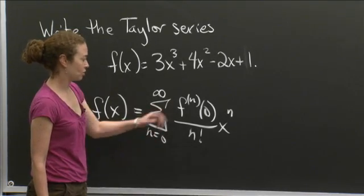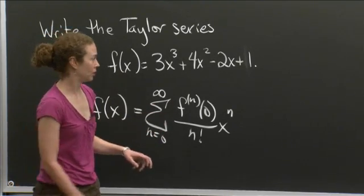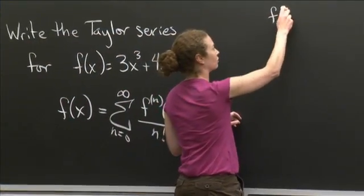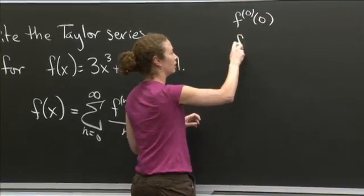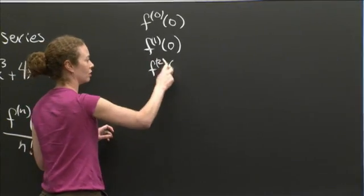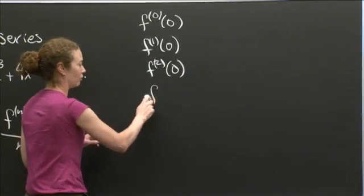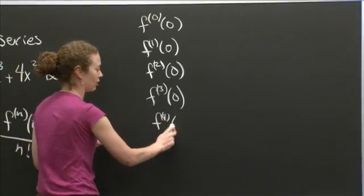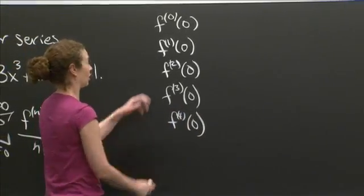So I'm going to make myself a little table. We're going to say f0 at 0, f1 at 0, f2 at 0, f3 at 0, f4 at 0. And I'm getting tired of writing, so I'm going to stop there.